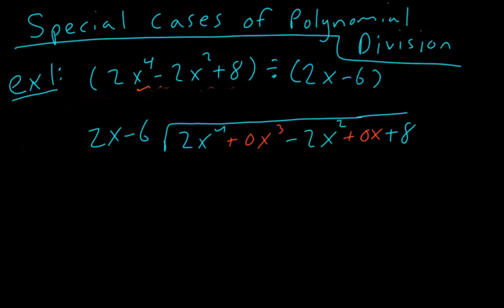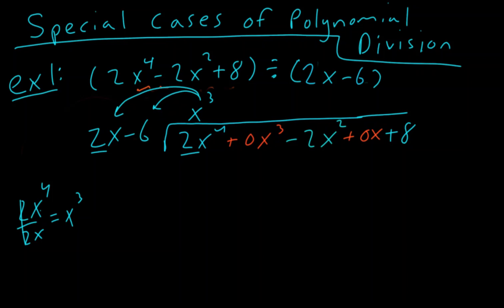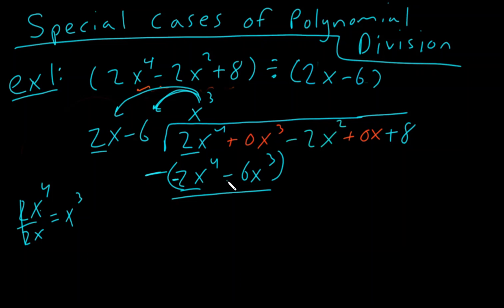Let's begin solving this problem. We have 2x to the 4th divided by 2x — the 2s cancel and x to the 4th divided by x is x cubed. I write x cubed up top. Then we distribute it back through: x cubed times 2x gives us 2x to the 4th, and x cubed times negative 6 gives us negative 6x cubed. We subtract that entire step — a negative times a positive is a negative, and a negative times a negative is a positive. So 2x to the 4th minus 2x to the 4th is 0, and 0x cubed plus 6x cubed is 6x cubed. Then we drop down our negative 2x squared.